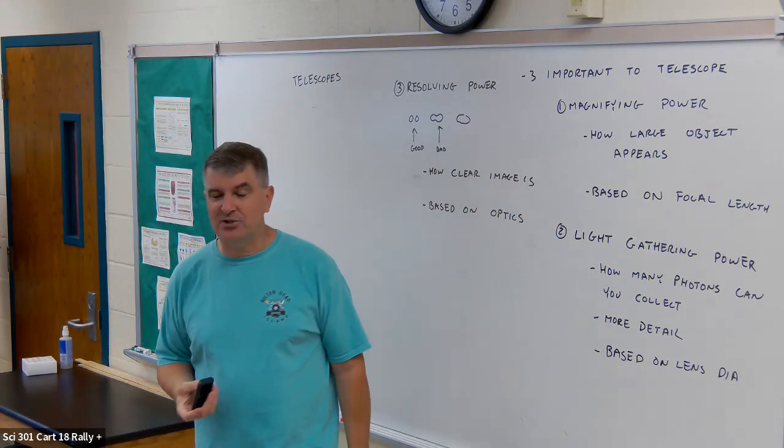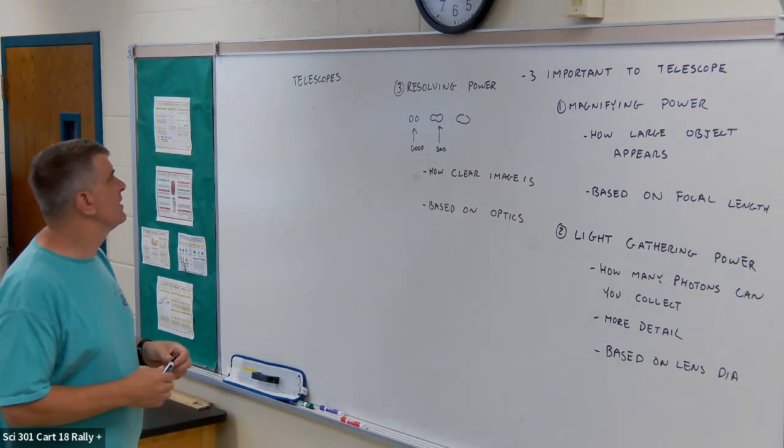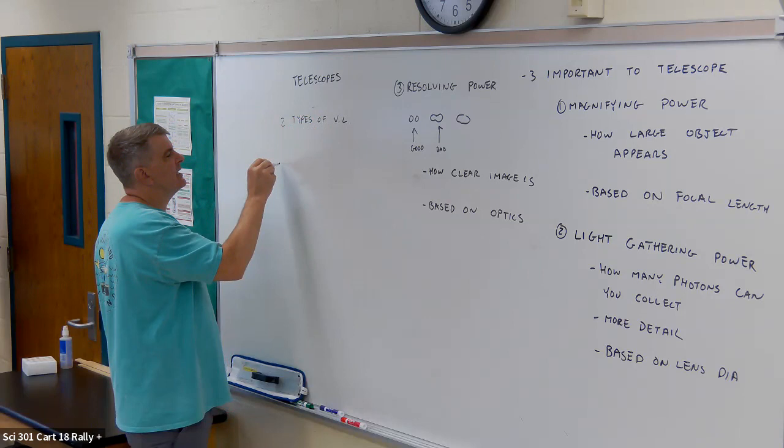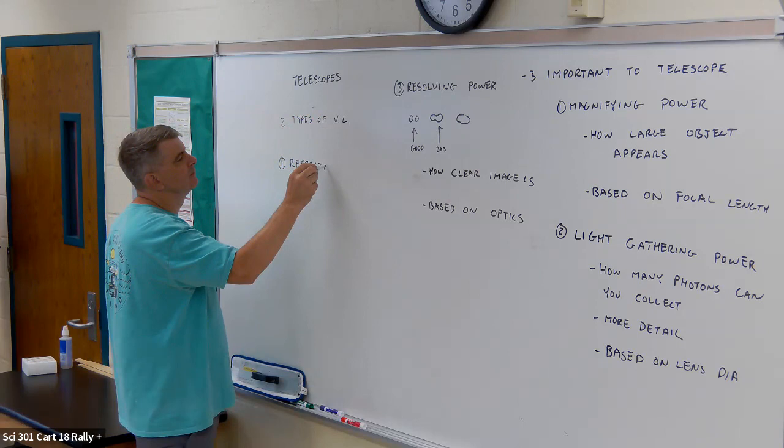But before you had really good optics, magnifying power is important. So the optics couldn't, you couldn't get the detail in it, but you could blow the image up so that you could look. Hence why we had the, you know, that giant telescope before. So those are what you consider. Now there are two types of visible light telescope. And as I said, there's type one is refracting and type two is reflecting.